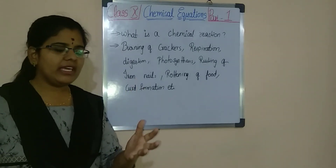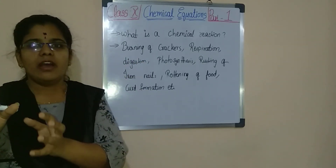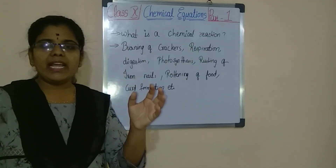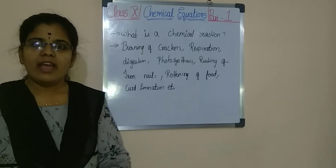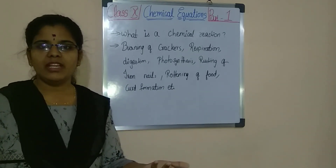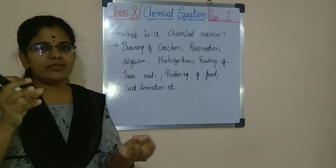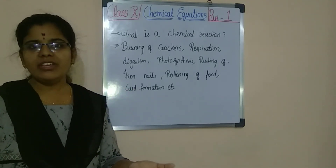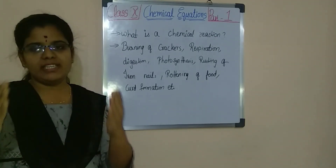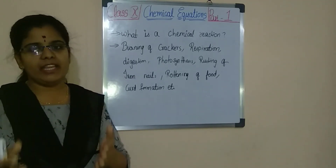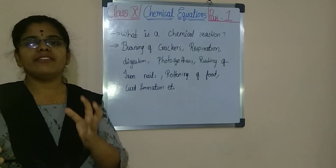For example, while cooking, you will be taking different ingredients before cooking — dal, water, mirchi powder, salt, and everything separately. When you mix them together, you get one different product. Can you separate them back? No. Can you bring the dal back to the same grain form, or separate the salt from it? No, you can't. So these are all called chemical reactions, which are permanent changes. We can also say them as irreversible reactions. Physical changes are reversible, but chemical changes are irreversible reactions.